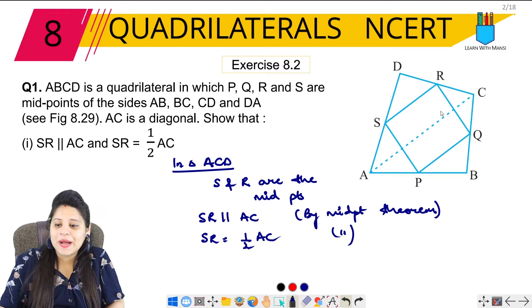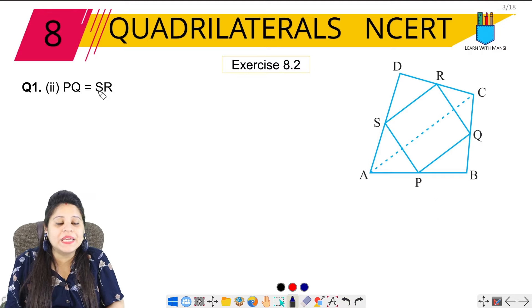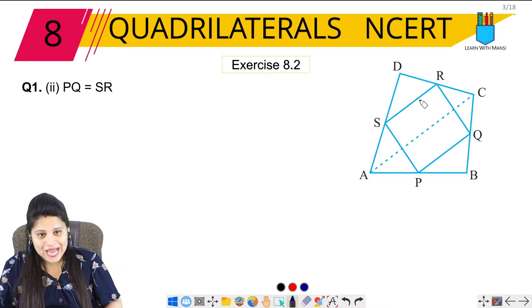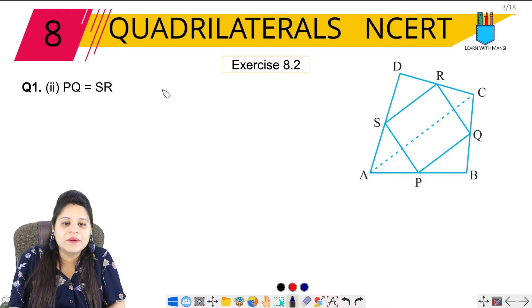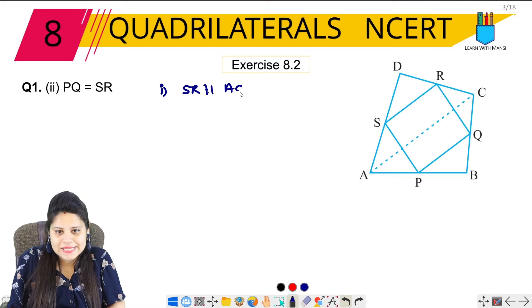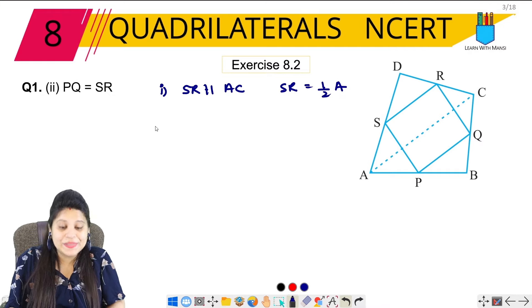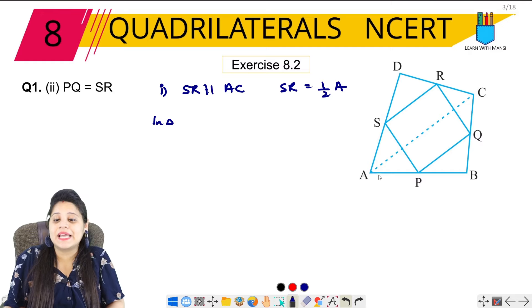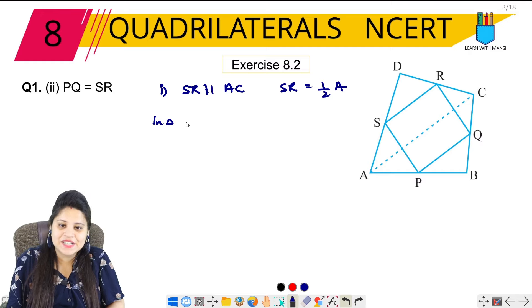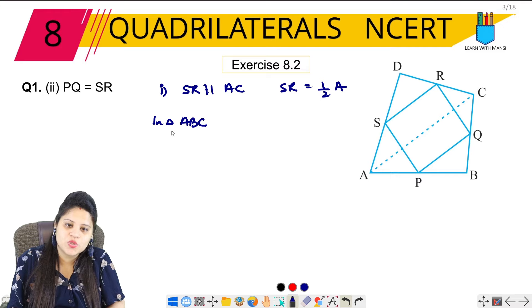Part (ii): PQ equals SR. In the first part, we proved that SR is parallel to AC and SR is half of AC. Now, in triangle ABC,